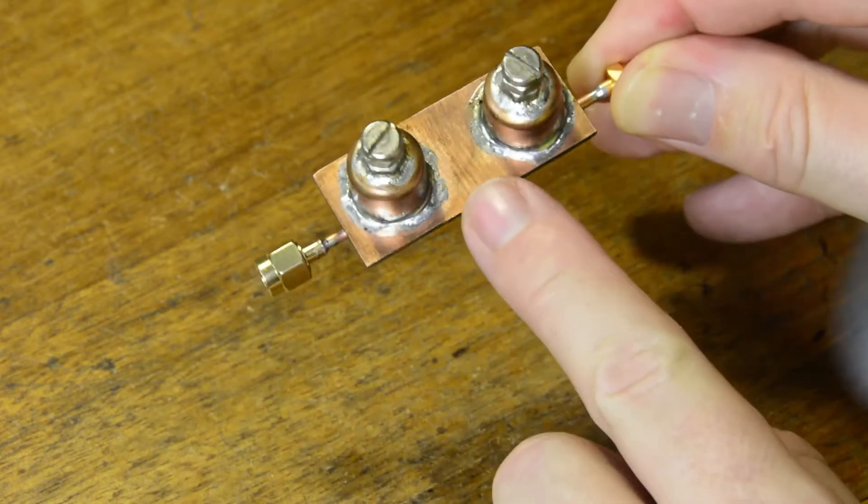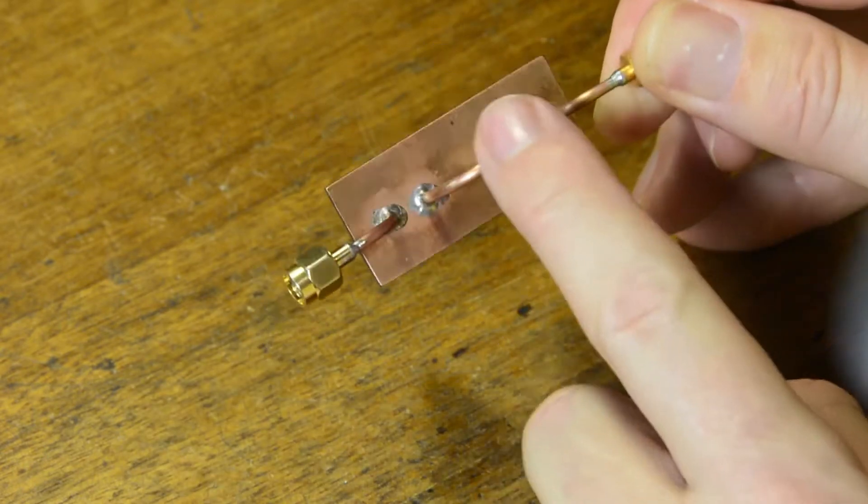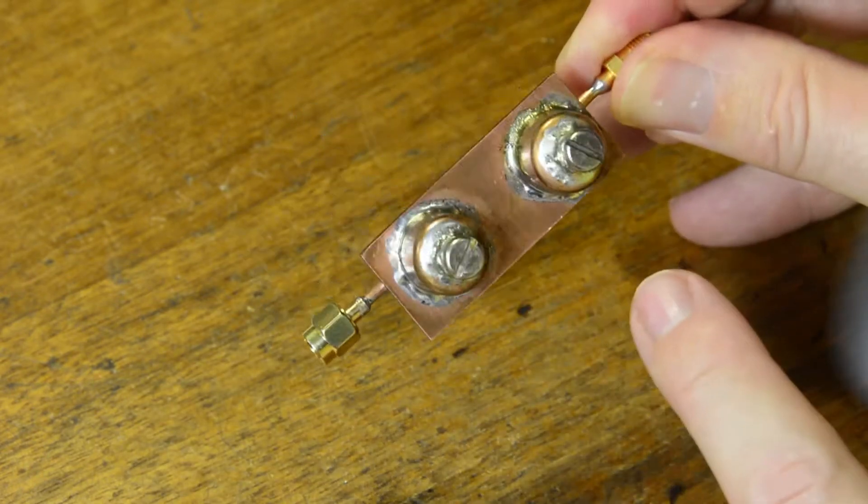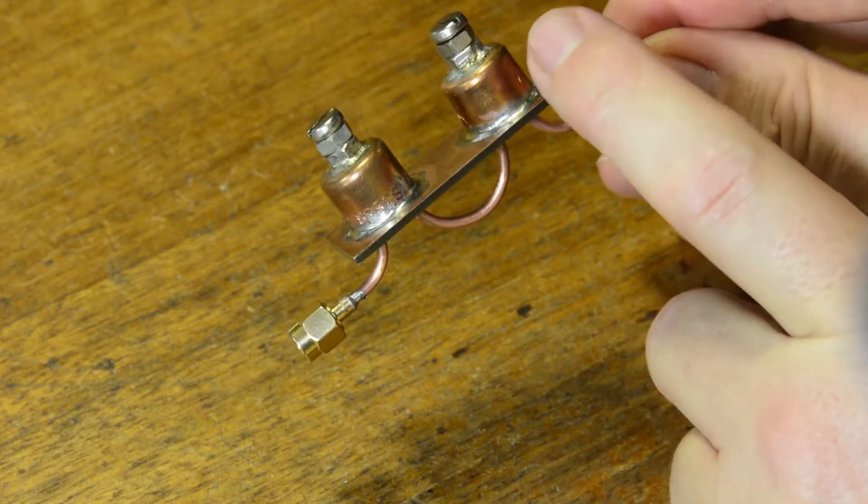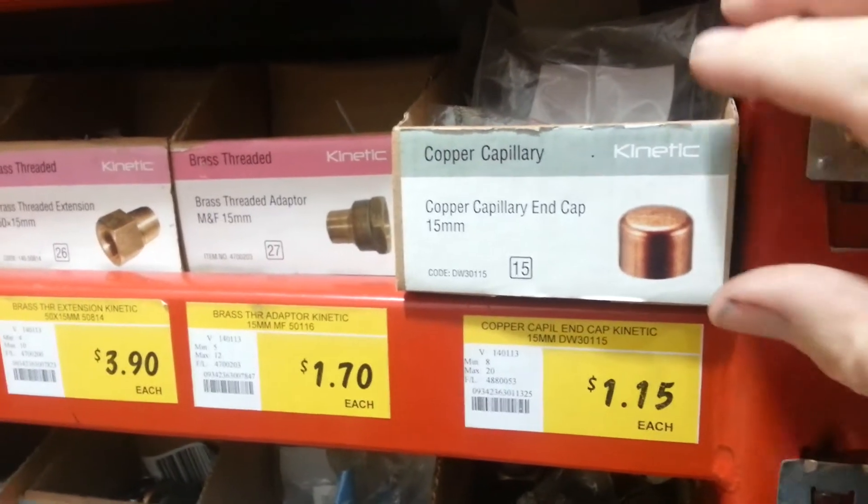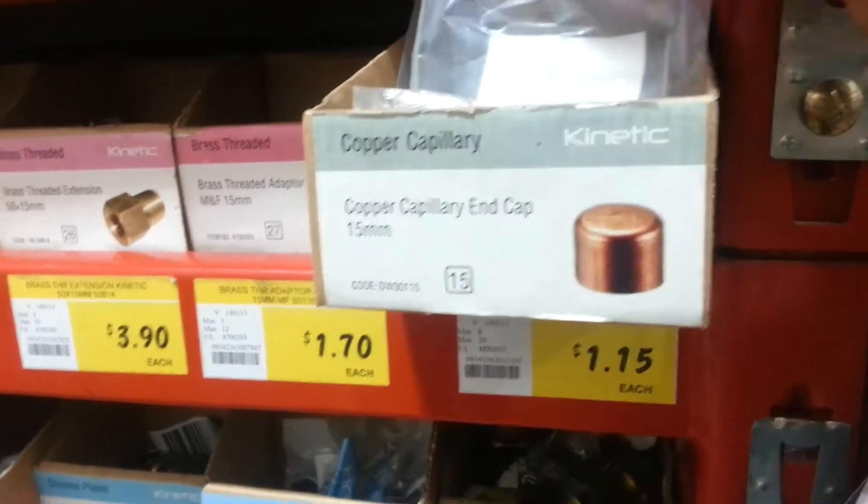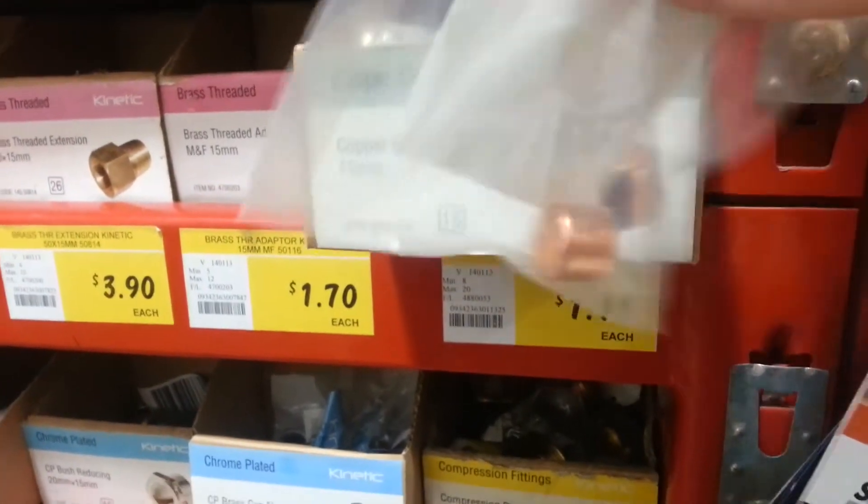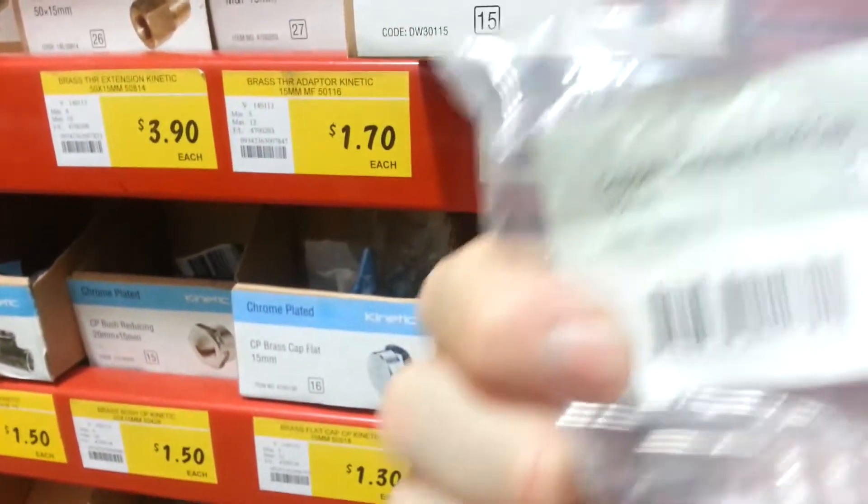It consists of a bit of double-sided circuit board just an off cut there cut to the right size. These are copper end caps or commonly referred to as pipe caps which are available from your favorite hardware store. I got these from Bunnings for $1.15 each.